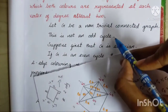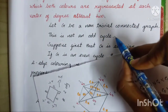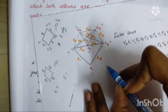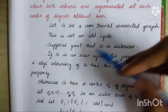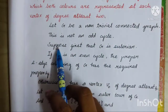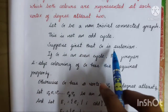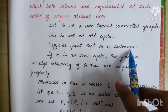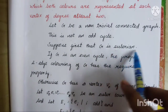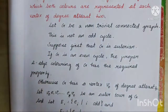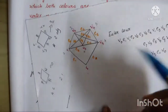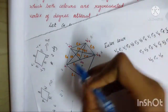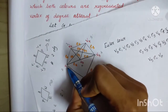An even cycle — we already said the number of vertices is even. This graph is even. Suppose first that G is Eulerian. An Eulerian graph is one where you can traverse all edges exactly once.